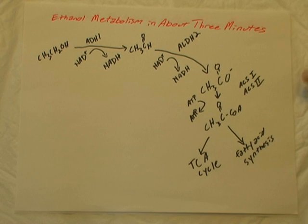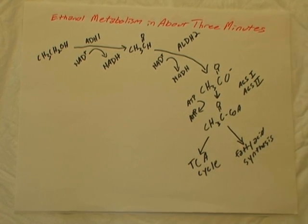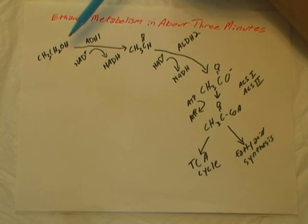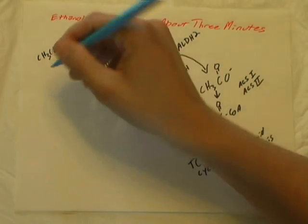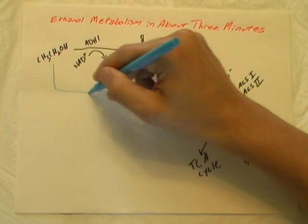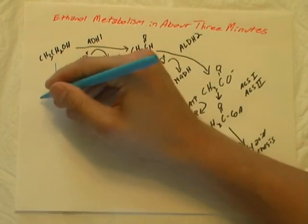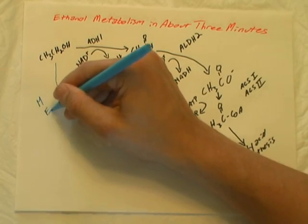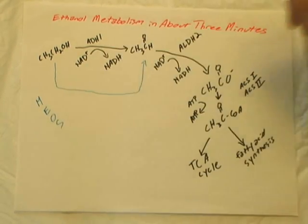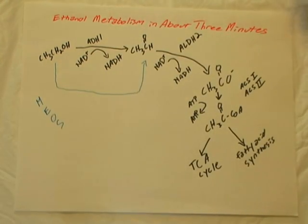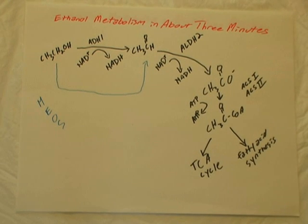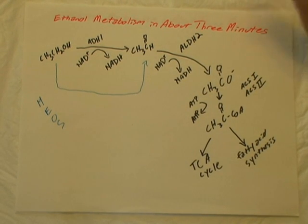At high concentrations of ethanol, there's one other system that comes into play for the initial conversion of ethanol to acetaldehyde, and that is the Microsomal Ethanol Oxidizing System, or MEOS.